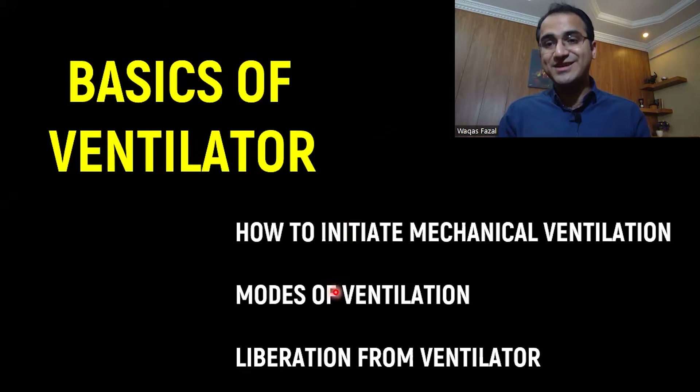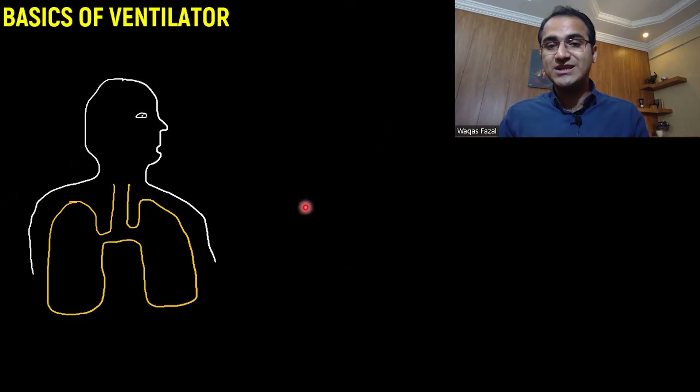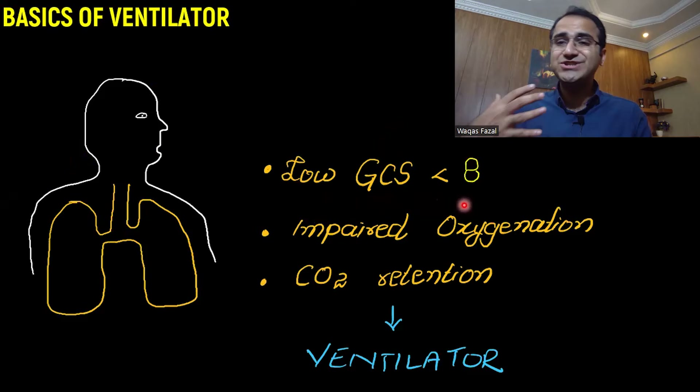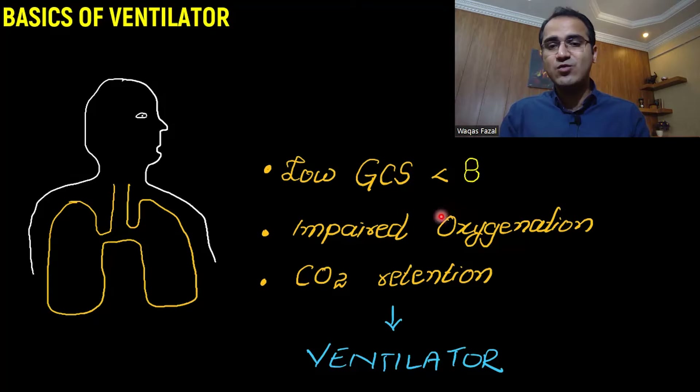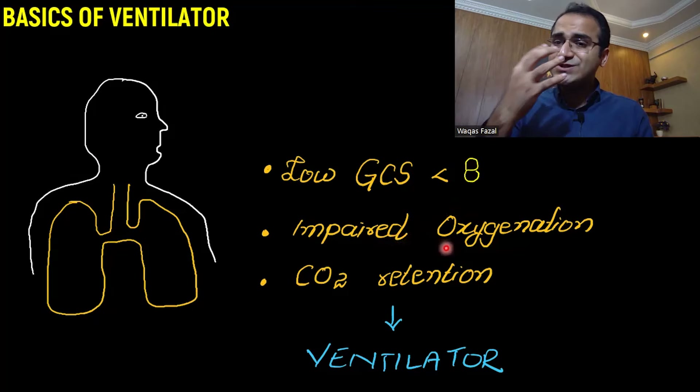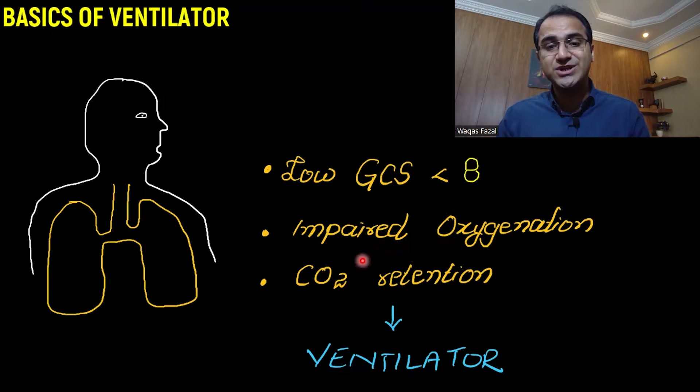What are the indications of mechanical ventilation? Indications include low GCS score — GCS less than 8 — where the patient has weak breathing effort. If the patient has impaired oxygenation despite giving 100% oxygen through an oxygen mask and is not maintaining saturation, or is developing CO2 retention and carbon dioxide needs to be washed out, that patient must be put on a ventilator.